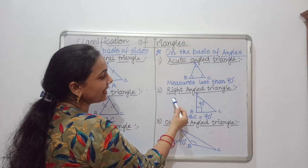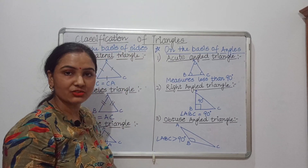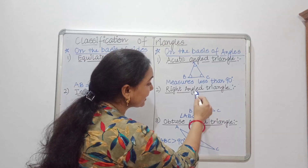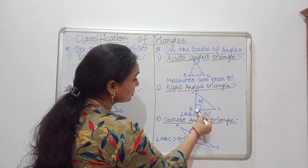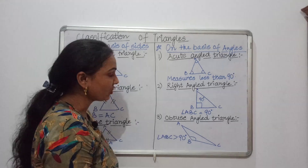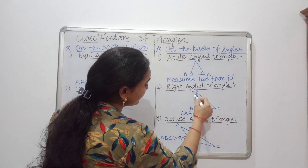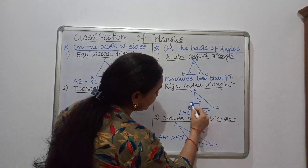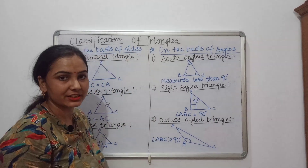Now comes the right angled triangle. A right angled triangle is a triangle in which one of the angles measures equal to 90 degrees. In triangle ABC, angle B is equal to 90 degrees.